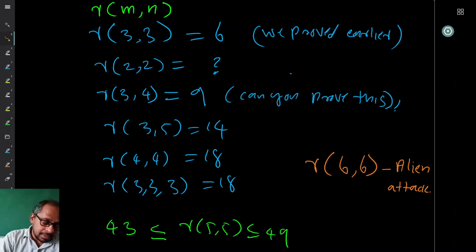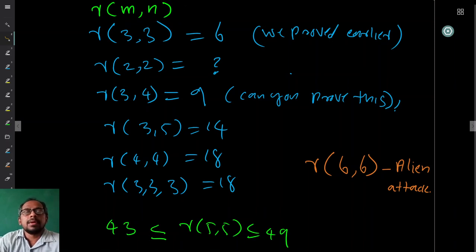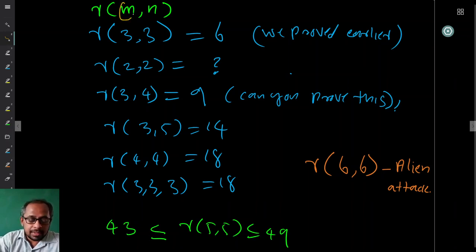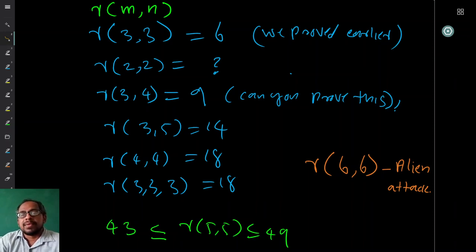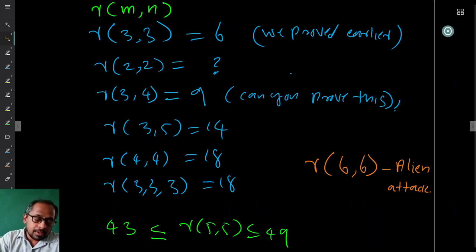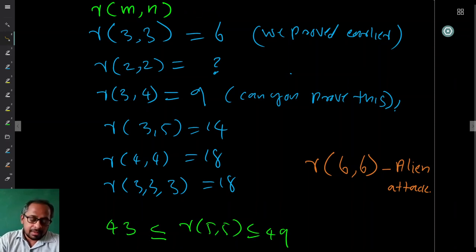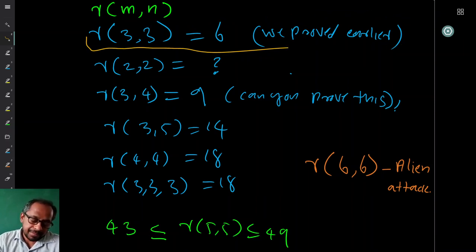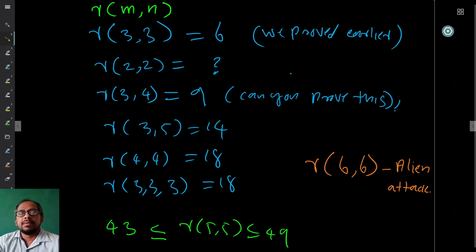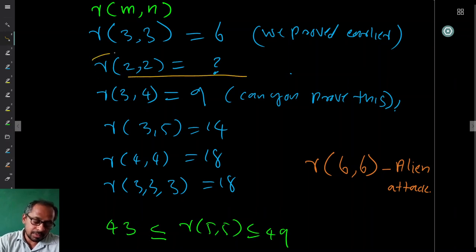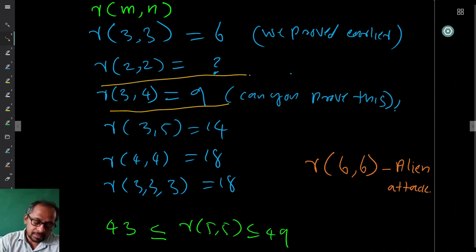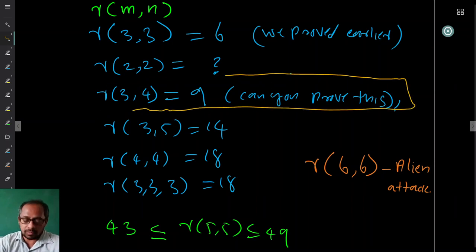In the two-color case, R(m,n) asks for the smallest p such that any red-blue edge coloring of the complete graph on p vertices contains a red Kₘ or a blue Kₙ. What we proved earlier using the pigeonhole principle was that R(3,3) = 6. What is R(2,2)? That should be easy. R(3,4) = 9 — can you prove it? R(3,5), R(4,4), and R(3,3,3) are also known values you can try to verify.